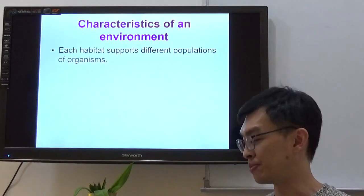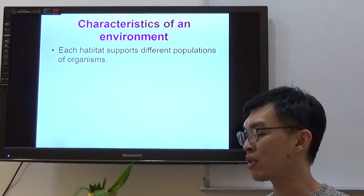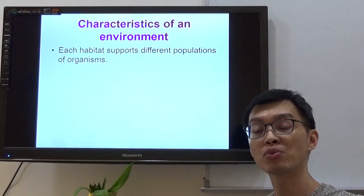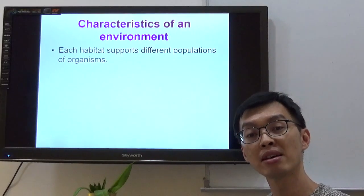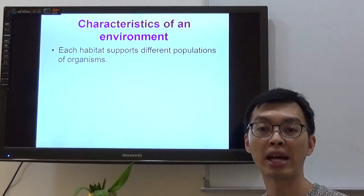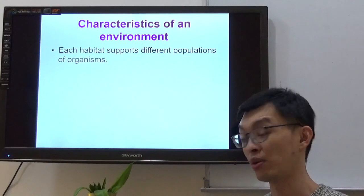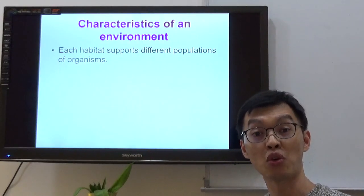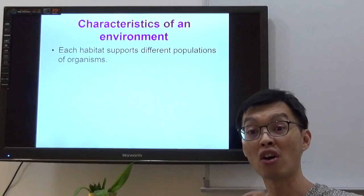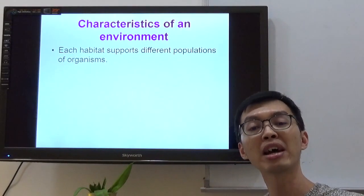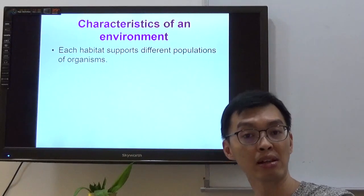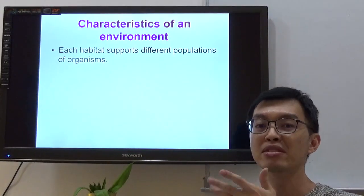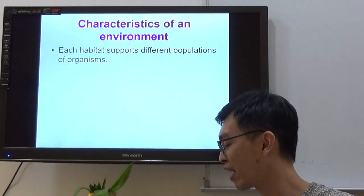Each habitat supports different populations of organisms. What does this mean? Remember last week, we learned what is a habitat? A habitat is a place where organisms live. What about populations? A population is a group of animals of the same kind that live together and reproduce at a particular place. Do you remember that? It's inside a notebook. Please flip through the jotter book.